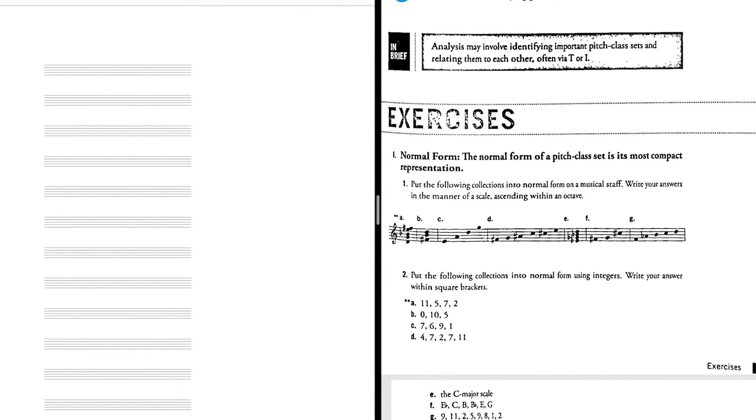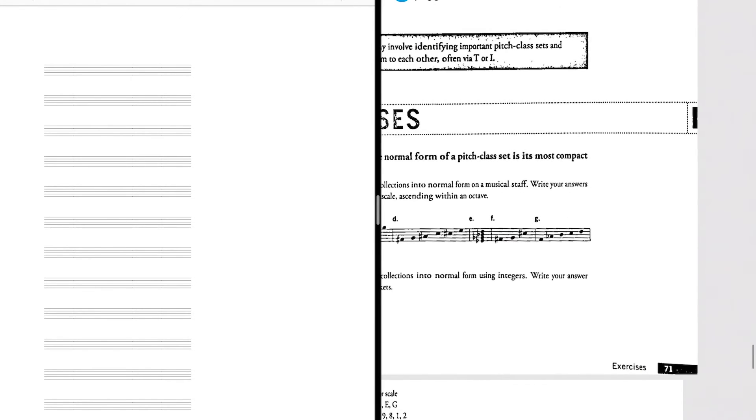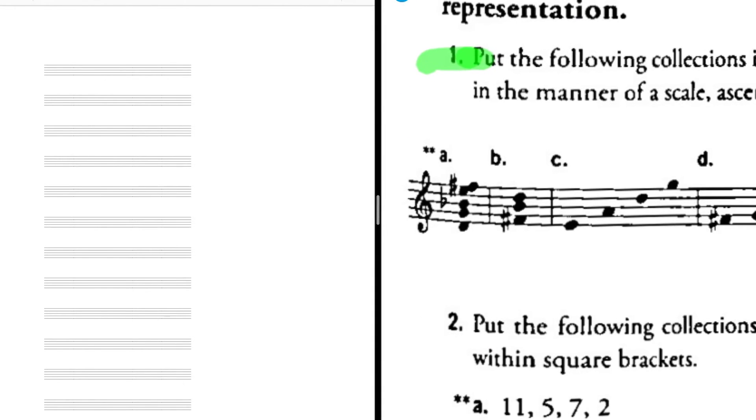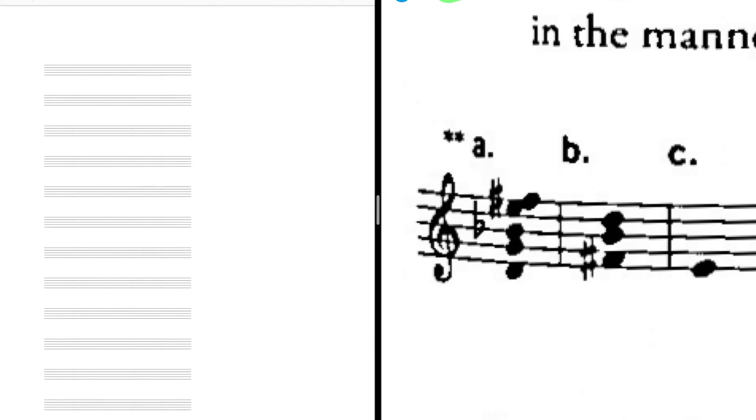Now let's try an exercise. On page 71 of the Strauss text, you can see exercise number one, normal form. The normal form of a pitch class set is its most compact representation. Activity one says put the following collections into normal form on a musical staff. Write your answer in the manner of a scale ascending within an octave. So it's given you here in letter A a collection of notes that are on the musical staff already, but they're clearly not within an octave, right?